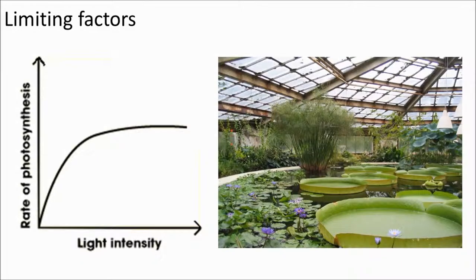Now, let's talk about limiting factors. There are three main factors that affect the rate of photosynthesis: light intensity, carbon dioxide concentration, and temperature. One of these three things will be the limiting factor.